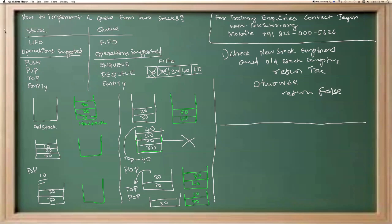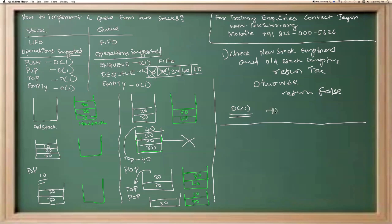Coming to the complexity: a typical stack supports push, pop, top, and empty in constant time. Similarly, enqueue, dequeue, and empty on the queue should be supported in constant time. Our dequeue does a data transfer from the new stack to the old stack, which looks like O(n). But if you closely observe, we do not do this transfer very often — only when the old stack is empty do we refill it from the new stack. So on average, the dequeue functionality still works in amortized constant time complexity.